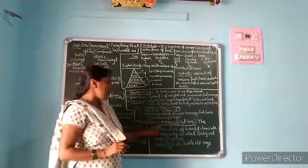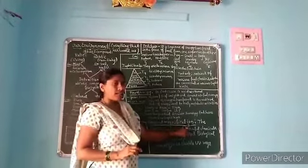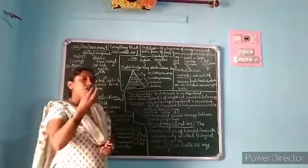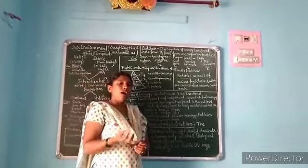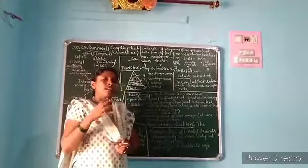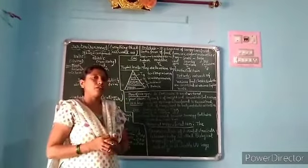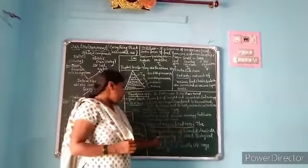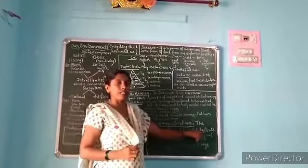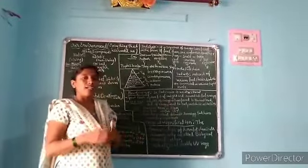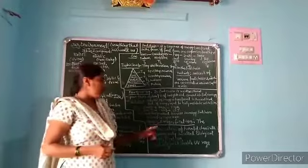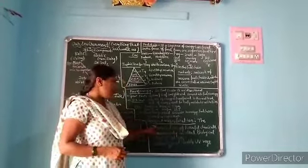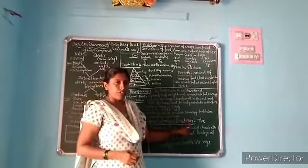Next, biological magnification. When we eat food and drink water, some chemicals enter our body. The concentration of these harmful chemicals increases as they move up the food chain — that is called biological magnification.